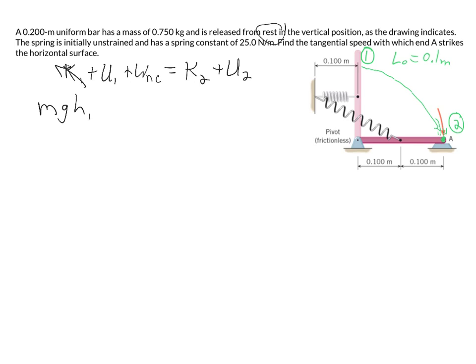For MGH, we use the center of mass of the rod. The bottom doesn't move; the top moves the full length down. So H₁ is half the rod length, which is 0.1 meters. The spring starts unstretched, so there's no initial elastic potential energy. There's no friction and we ignore air resistance, so work by non-conservative forces is also zero.